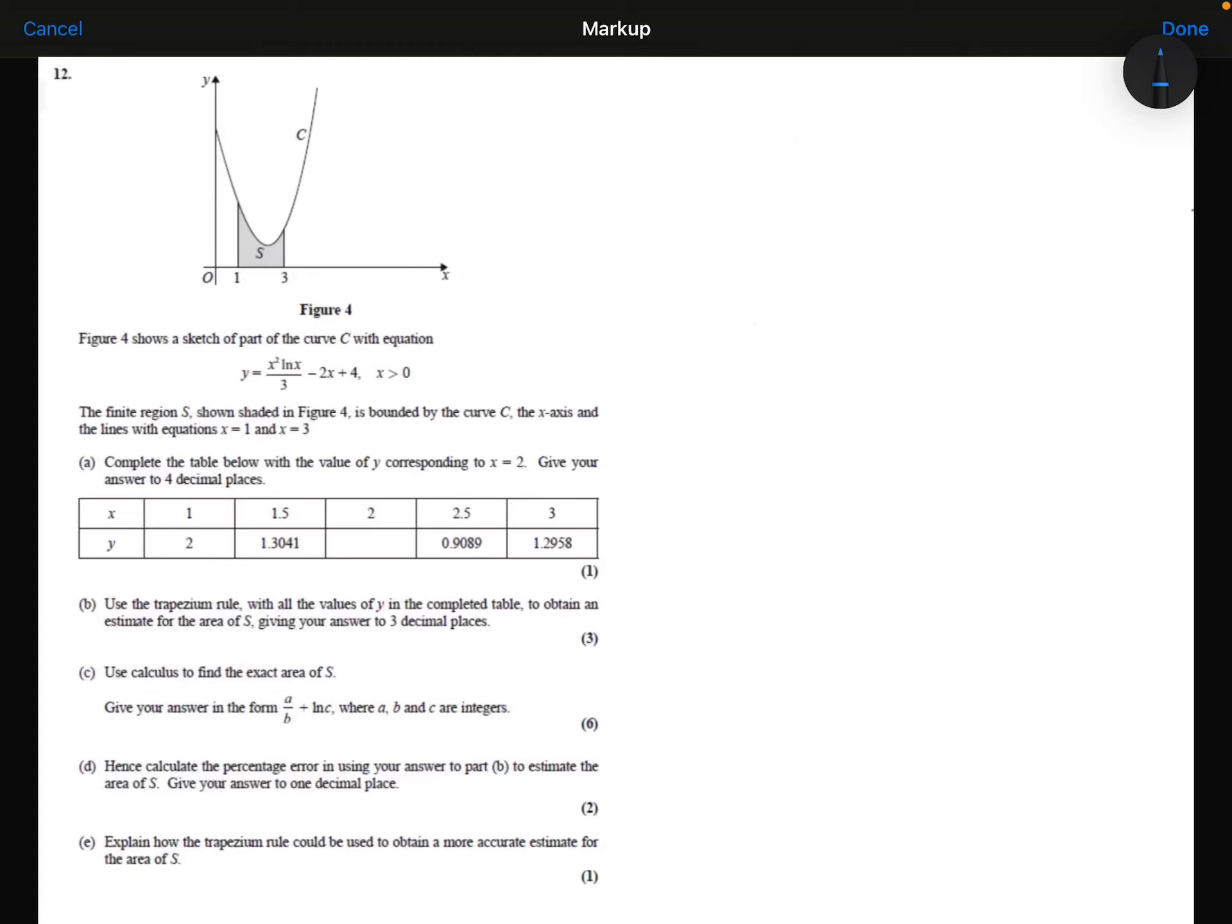Figure 4 shows a sketch of part of the curve C with equation y equals x squared ln x over 3 minus 2x plus 4, where x is greater than 0. The finite region S shown shaded in Figure 4 is bounded by the curve, the x-axis, and the lines with x equals 1 and 3.